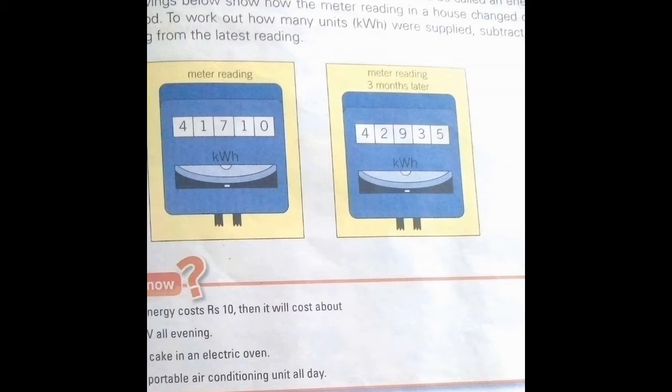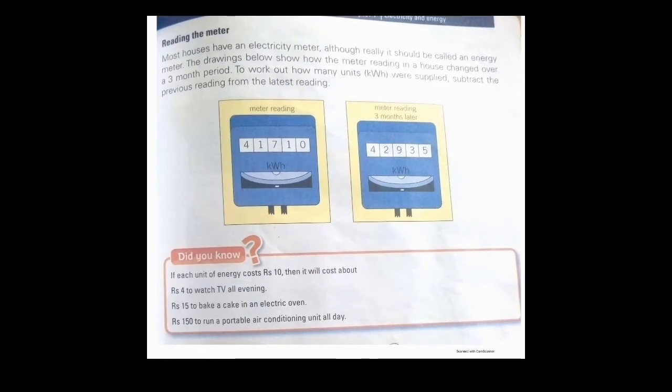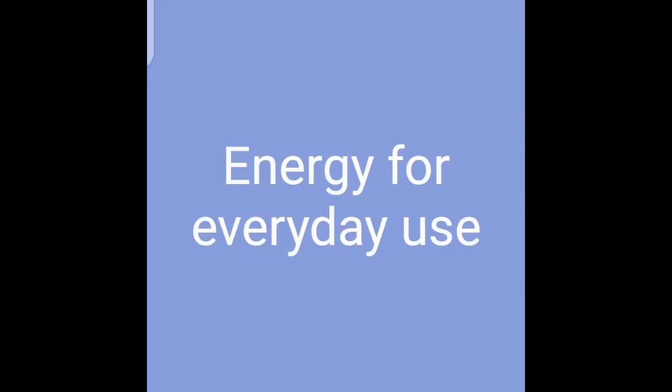You simply subtract the previous month's reading from the next month's reading to get the units used. For example, if each unit costs 10 rupees, it costs about 4 rupees to watch TV all evening, 15 rupees to bake a cake in an electric oven, and 150 rupees to run a portable air conditioner all day.